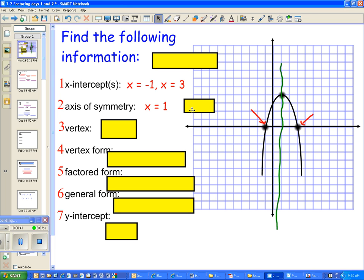The vertex, well, the vertex, I can see it. It's right there. I go over 1 and up 4, so it's 1 comma 4.